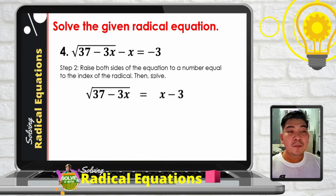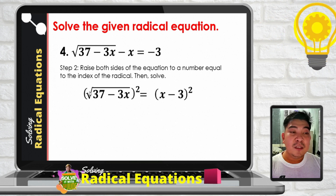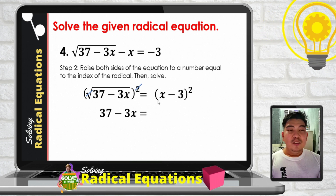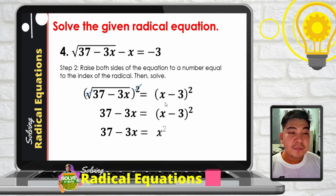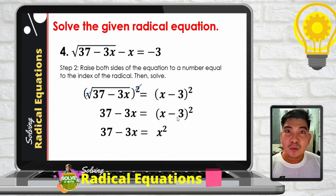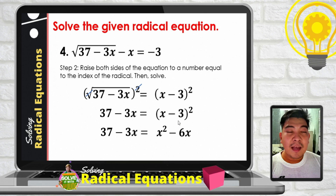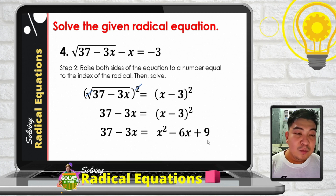Step 2: raise both sides by 2, since the index is 2. The quantity square root of 37 minus 3x squared gives 37 minus 3x. On the right side, squaring the binomial x minus 3 produces a quadratic trinomial: square the first term to get x squared; multiply the first and second terms and double it — x times negative 3 times 2 gives negative 6x; square the last term — negative 3 squared gives positive 9. So we have: 37 minus 3x equals x squared minus 6x plus 9.